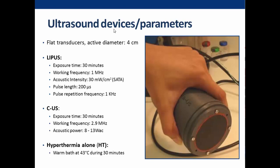We compared this group with low intensity ultrasound delivered in continuous mode, which produces both mechanical stress and heat up to 43°C. The exposure time was again 30 minutes, but the working frequency was higher at 2.9 MHz to increase wave absorption. The acoustic power was adjusted between 8 and 13 acoustic watts to raise and then maintain the temperature at 43°C, producing hyperthermia and mechanical stress. These two groups were compared with hyperthermia alone, created using a warm bath at 43°C for 30 minutes.